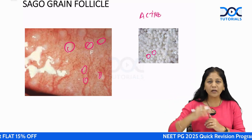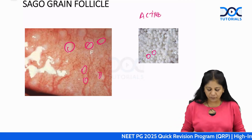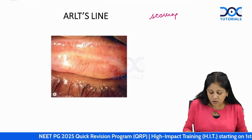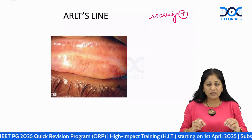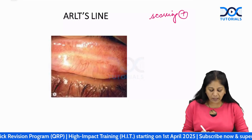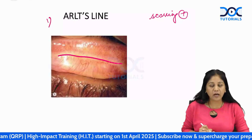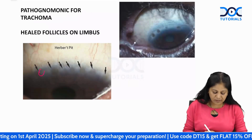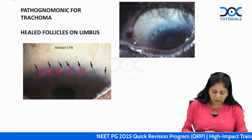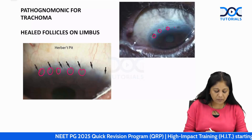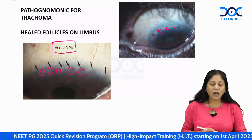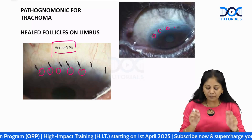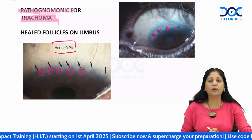Once this stage becomes chronic and the child has grown into an adult, it leads to scarring. The stage of scarring is first visible in the conjunctiva as a line called the Arlt's line. Later, we also see Herbert pits — healed follicles on the limbus.